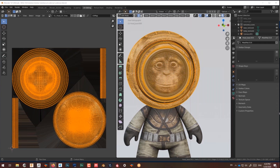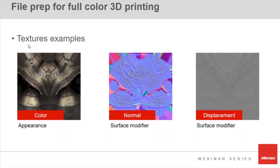There are different map types. We have the color/base map — this is the one that goes with the body of the model I showed you. There's the normal map, which was generating a little bit of displacement. There's also the displacement map, also called height map or bump map — this is a black and white image that keeps that sensation of height on the surface of the model.